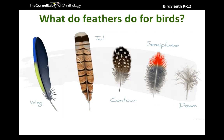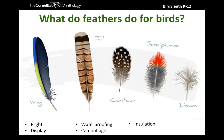You guys are hitting all the main points. Nesting material - birds do use feathers for nesting occasionally, and you'll see things like tree swallows fighting for a nice white feather to line the nest. You picked out a number of great functions: flight, display, waterproofing, camouflage, and the ever-important insulation. Feathers serve a huge range of purposes for birds - they allow them to survive on every continent, including swimming in Antarctic waters.